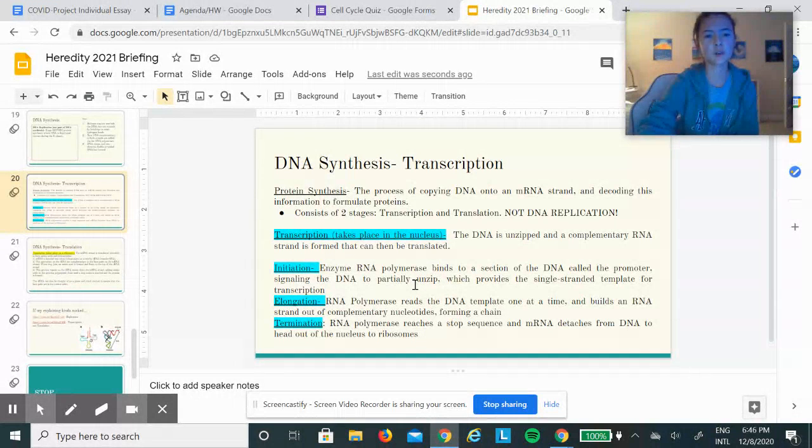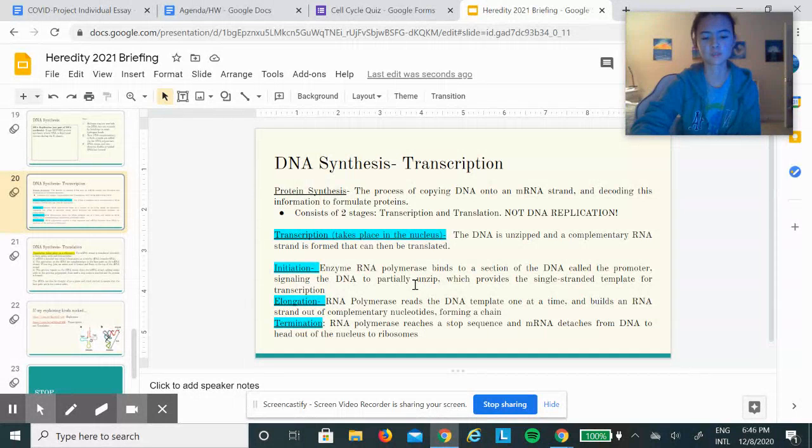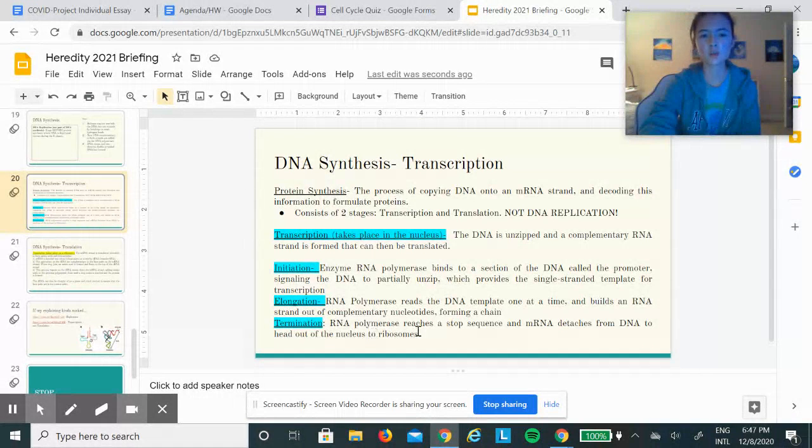The RNA polymerase binds to the bases on the DNA and keeps moving along the DNA chain, eventually forming the mRNA strand.